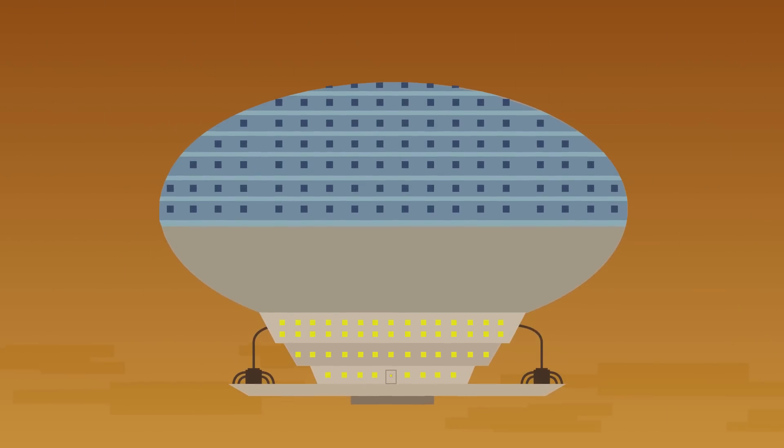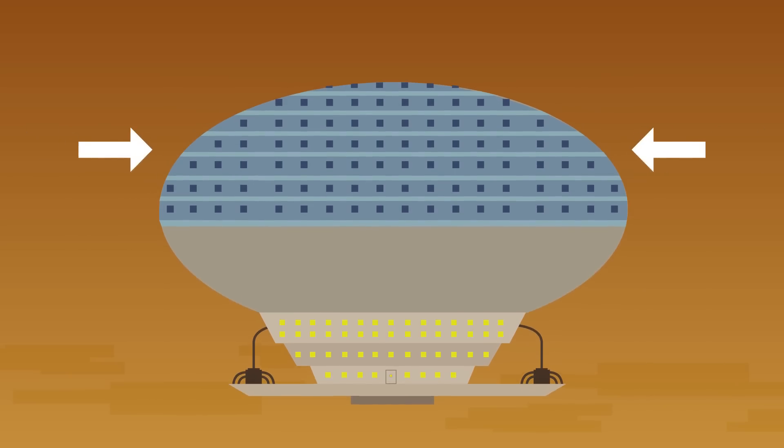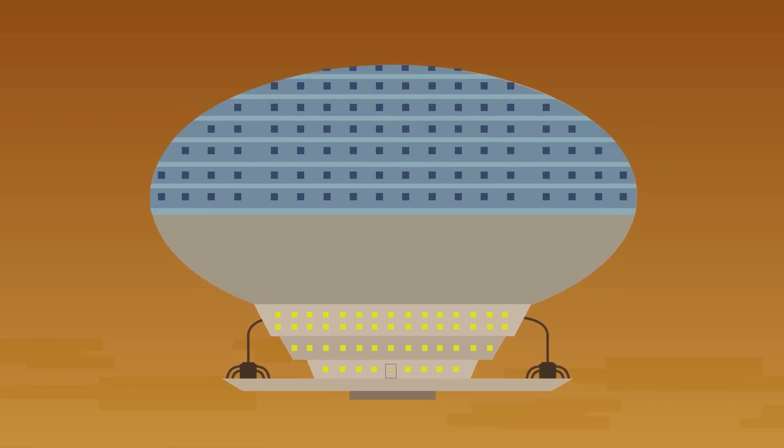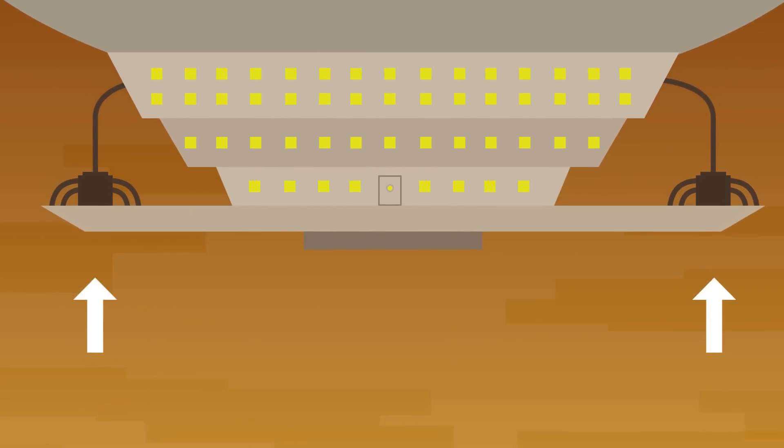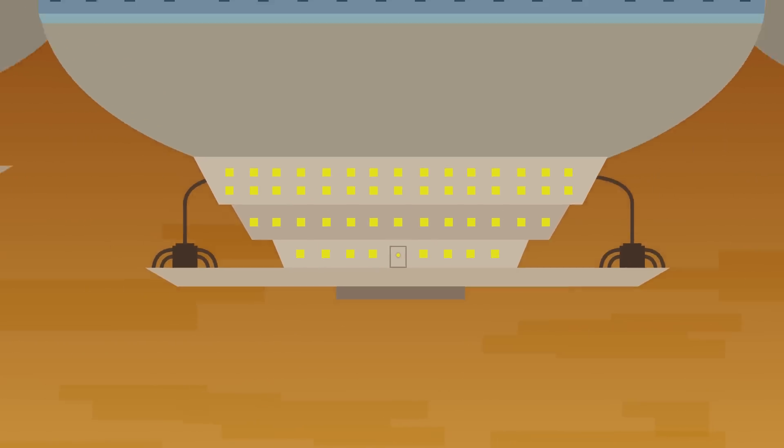You may be wondering how these floating cities would be powered. Firstly, the vehicles would be equipped with massive solar panels to take advantage of the sun's energy. Second, there's the possibility of using the carbon in the atmosphere to generate electricity via graphene-powered superconductors, or synthetic photosynthesis.